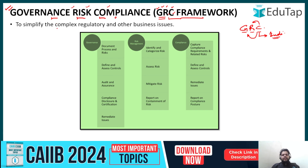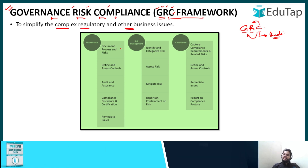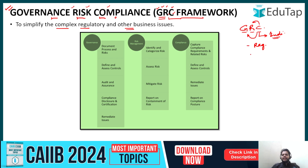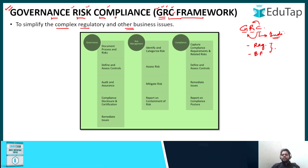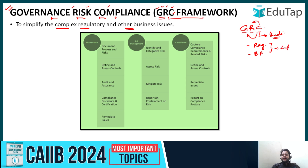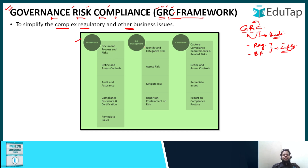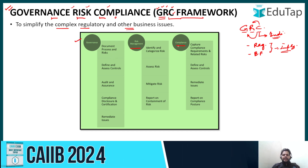So why do we need the GRC framework? In order to simplify the complex regulatory and other business issues. As you know, regulatory frameworks are many, and along with that, individual bank policies are also there. To simplify all of these, we have brought in a framework called the GRC framework. Let's first look at the components under governance, and similarly we will look at risk management and compliance.